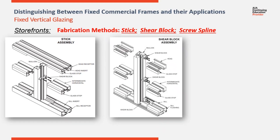The Shear Block Method starts with a single one-piece tubular vertical, and shear blocks are attached to the sides to receive the horizontal members. This method allows you to pre-build a punched opening that is two, maybe three bays wide.